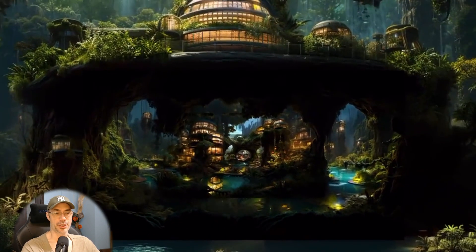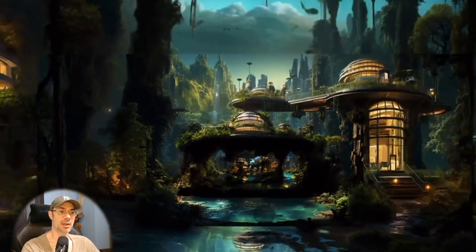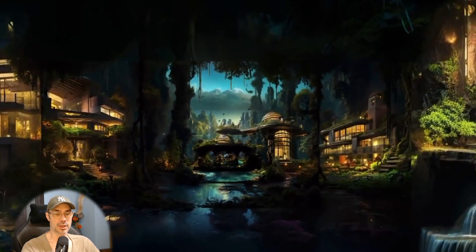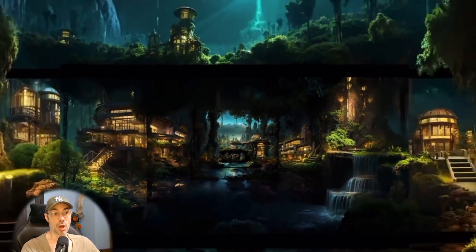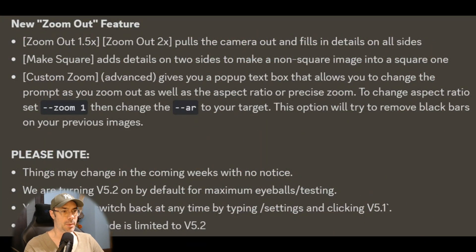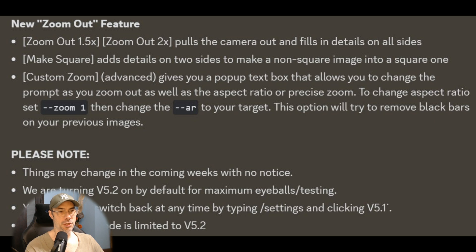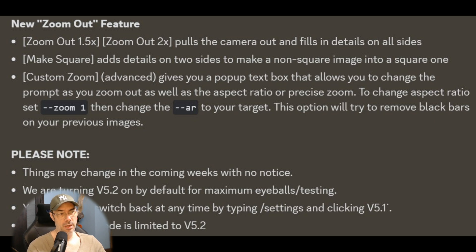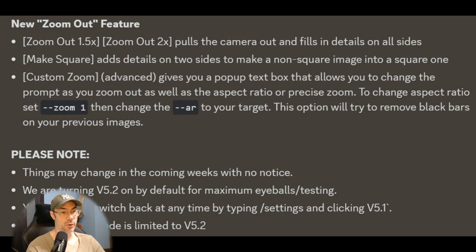We don't get the same level of detail when doing this in Stable Diffusion unless we use inpaint inside the outpaint at every point. You use it by typing zoom out 1.5x or zoom out 2x. You can also do a custom zoom in square brackets, then change the aspect ratio by setting --zoom 1 and then changing --ar to your target.